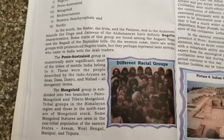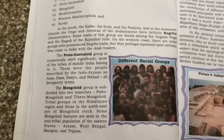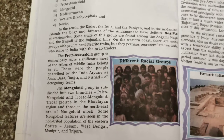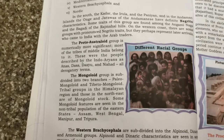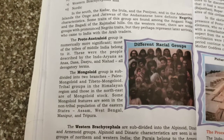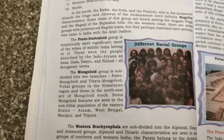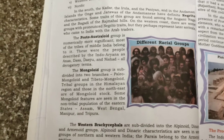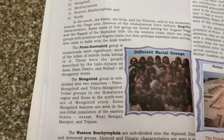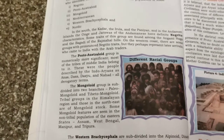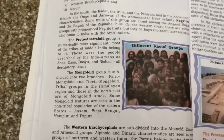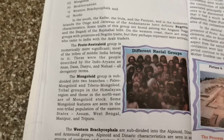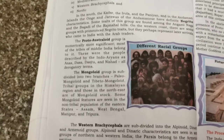The Proto-Australoid group is numerically more significant. Most of the tribes of Middle India belong to it. These were the people described by the Indo-Aryans as Anas, Dasas, Dasyus, and Nishads — all derogatory terms. The Proto-Australoid are mostly the tribes of Middle India, where the Aryans settled.